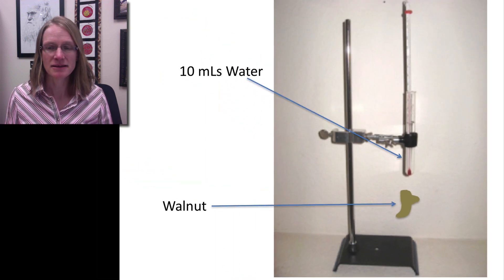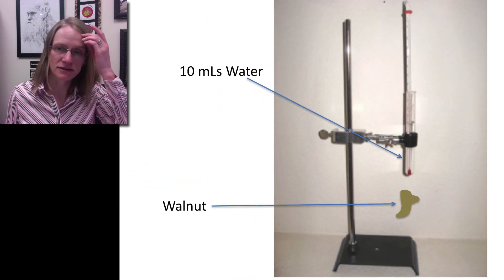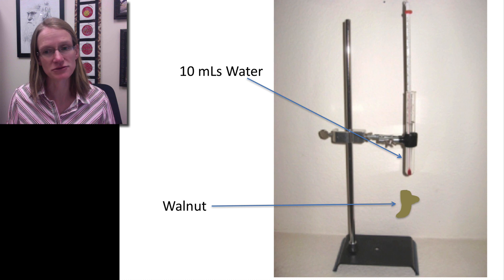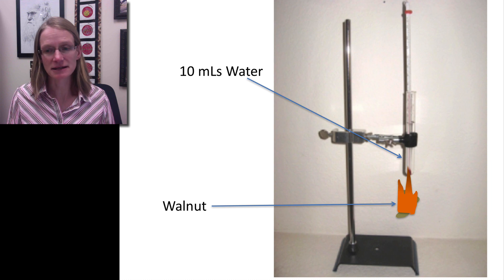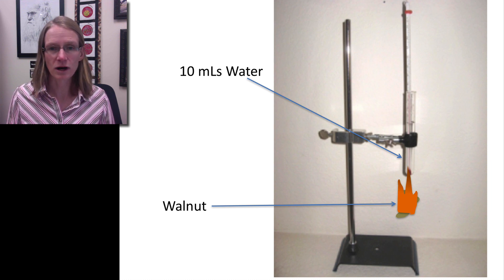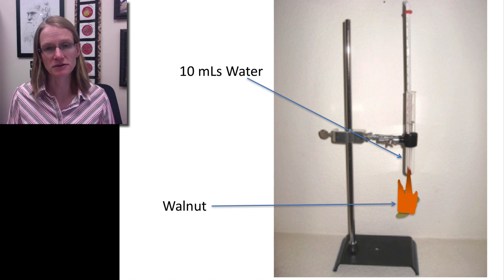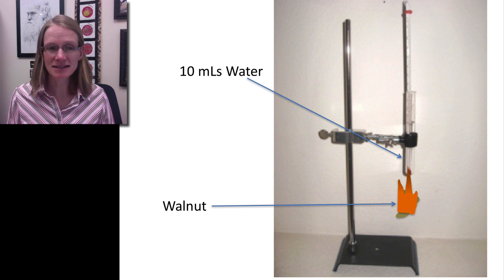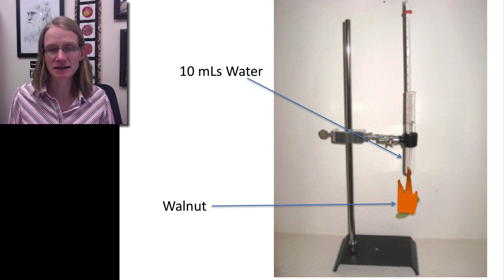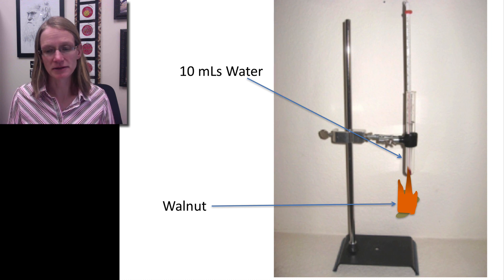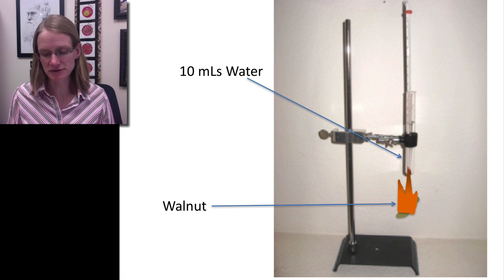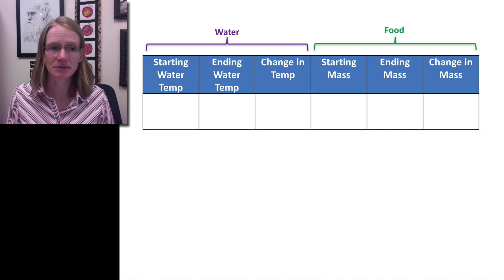So let's start out with the mechanism or the structure that we use to be able to measure the energy that was in that walnut. And so we know we started out with a walnut and we went ahead and set fire to it and we had those 10 milliliters of water that we then watched the temperature over the course of the experiment. And so let's take some of the data that we were able to collect and I'll remind you of what some of those numbers were in just a minute. And we can populate this table here.